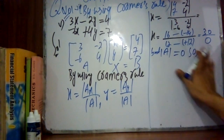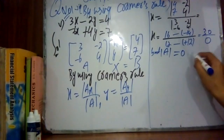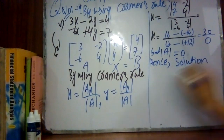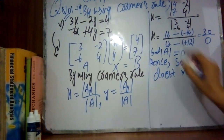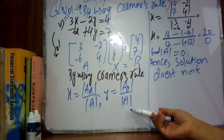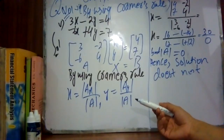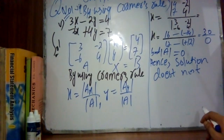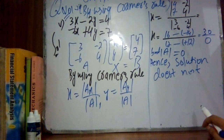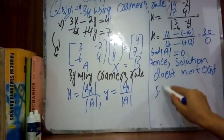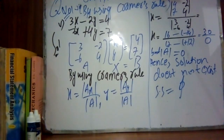The determinant of A equals 0. So in this question the solution does not exist, because when the denominator is zero — just like in a calculator where dividing by zero gives an error — the solution is not possible. Hence the solution set is empty; the solution does not exist.